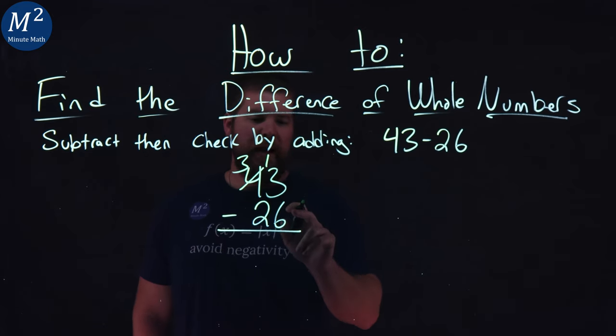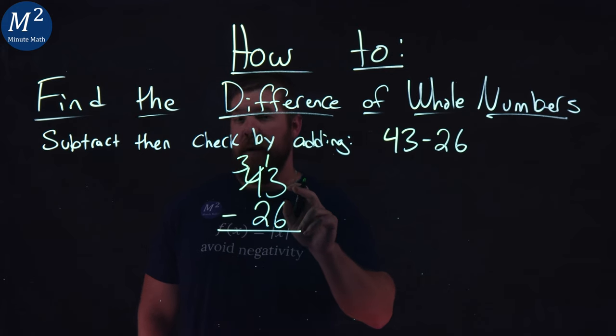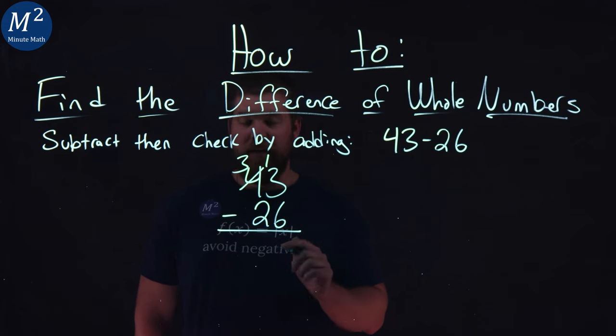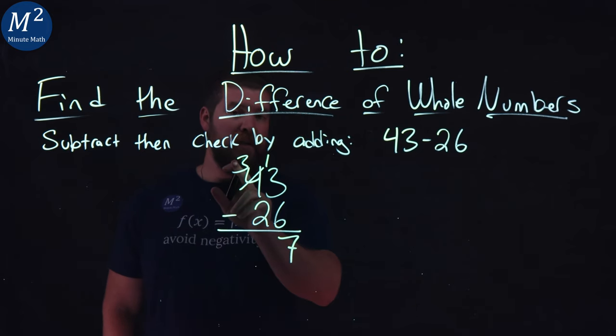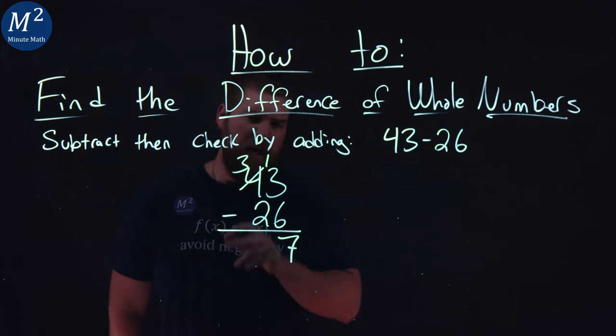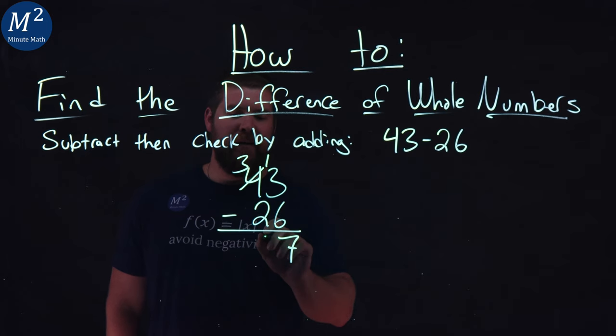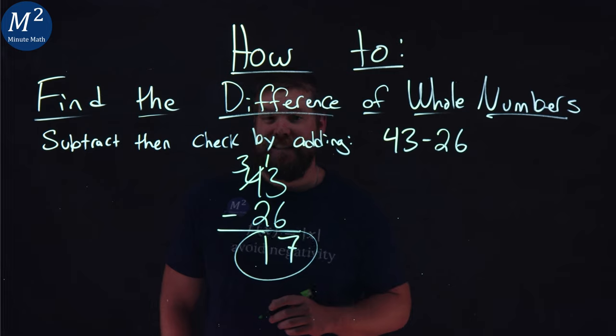So a 13 now and a 6. So 13 minus 6 comes out to be a 7. From there, I go to the next digit here, which 4 turned into a 3. 3 minus 2 is a 1. And so 43 minus 26, we got was a 17.